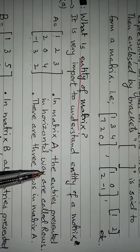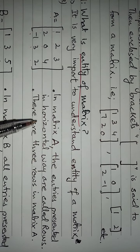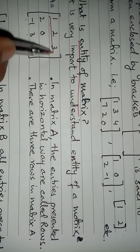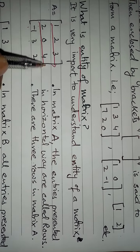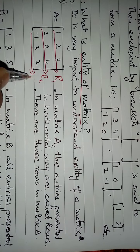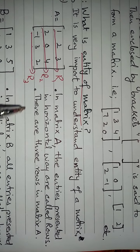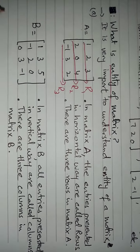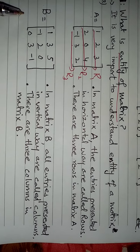In Matrix A, the entries presented in horizontal way are called rows. Those entries which are written in horizontal way, we call them rows: R1, R2, R3. So if we observe, there are three rows in Matrix A.